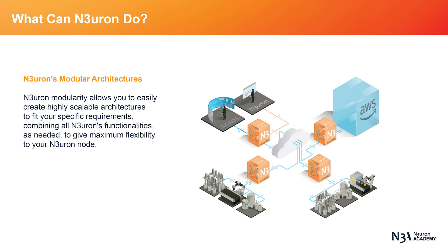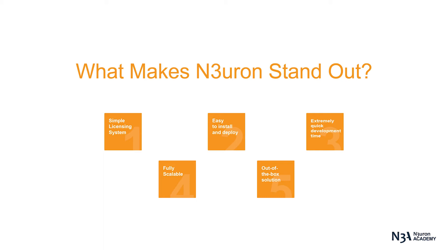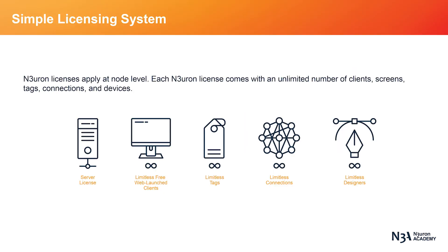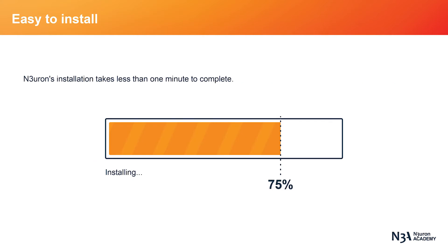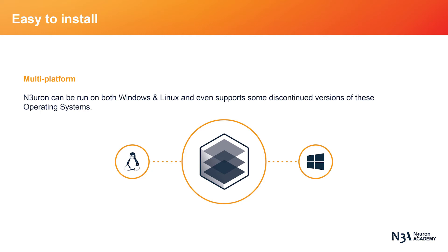Neuron's Modular Structure allows you to easily create highly scalable architectures to suit your specific requirements, combining all of Neuron's functionalities as needed, in order to give maximum flexibility to your Neuron node. Neuron licenses apply at node level. Nodes can be remote or local, depending on whether or not they exchange data with another node. Each Neuron license gives you the ability to add an unlimited number of clients, screens, tags, connections, and devices. With a footprint of around 40 megabytes, Neuron installation takes less than one minute to complete, making it fast and easy to deploy. Neuron is a multi-platform software that can run on Windows and Linux, supporting numerous previous versions of these operating systems.